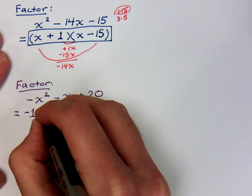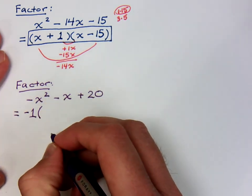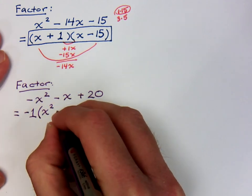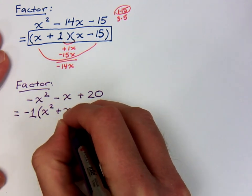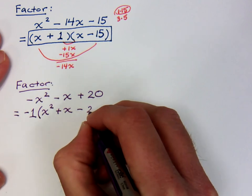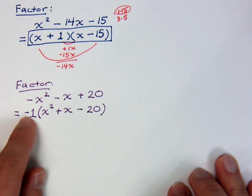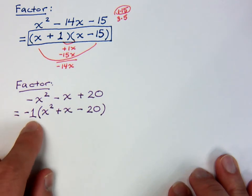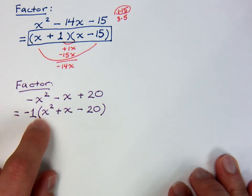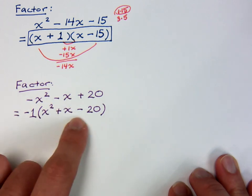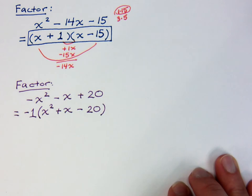And what that does is that makes the rest of the problem really easy for us. So if I factor out or divide out that negative 1, it gives me a positive x², a positive x, that gives me a negative 20. Now if you're not sure about this, multiply the negative one back. Negative 1 times x² is negative x². Negative 1 times x is negative x. Negative 1 times negative 20 is positive 20. So we've done everything correctly.